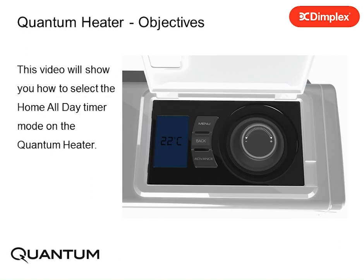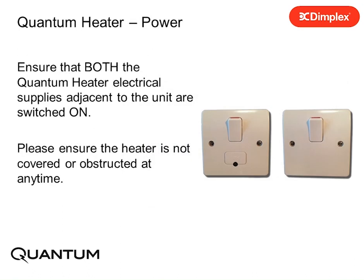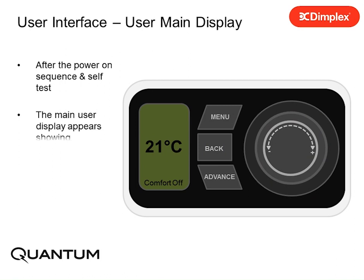This video will show you how to select the home all day timer mode on the quantum heater. Ensure that both the quantum heater and electrical supplies adjacent to the unit are switched on. Please ensure the heater is not covered or obstructed at any time. After the power on sequence and self test have completed, the main user display appears showing the current required room temperature and the current comfort status.